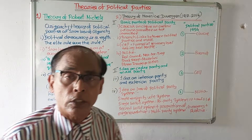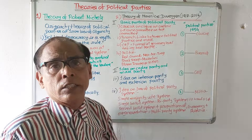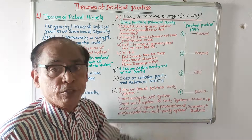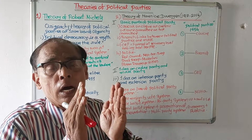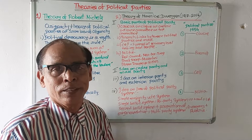Now we will discuss another theory told by Maurice Duverger. Maurice Duverger was born in the year 1917 and died in the year 2014. In his book Political Parties, published in the year 1954, he told about political party and party system. His view is known as Duverger's theory on political party and party system.